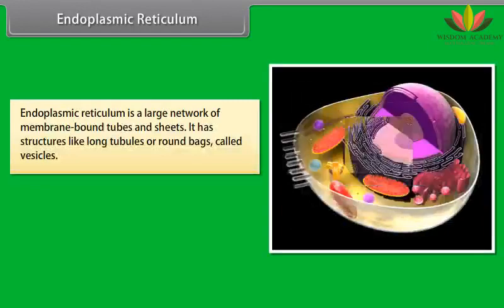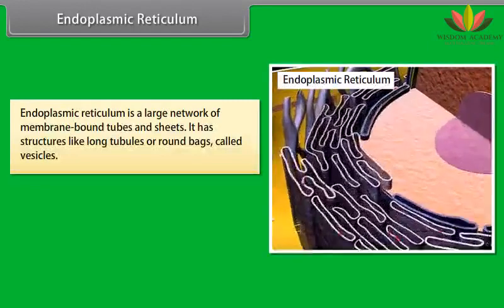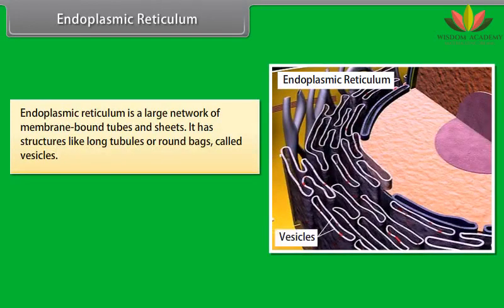Endoplasmic reticulum is a large network of membrane bound tubes and sheets. It has structures like long tubules or round sacks called vesicles. On the basis of presence of ribosomes, they are of two types: rough endoplasmic reticulum (RER) and smooth endoplasmic reticulum (SER).